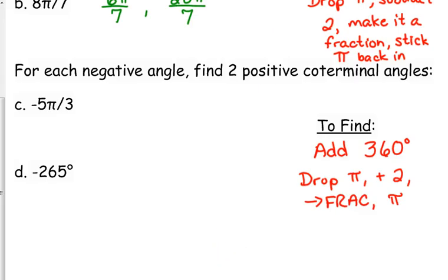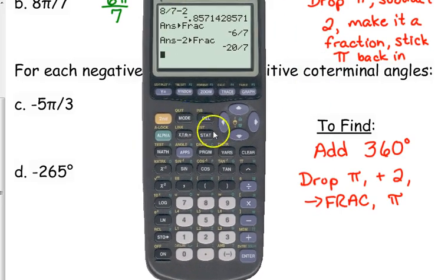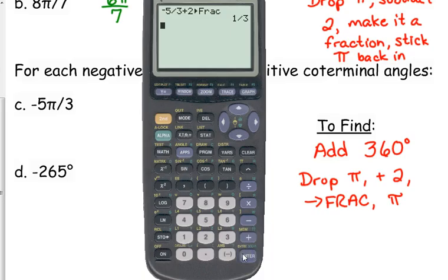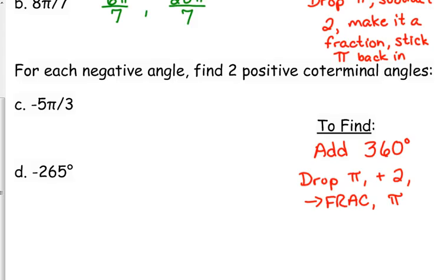Our first example is negative 5π/3. We take negative 5/3 and add 2, turn it into a fraction — and it is a positive number. So π/3 is a co-terminal angle. If we add 2 again, we end up with 7π/3, since 1/3 plus 6/3 equals 7/3.